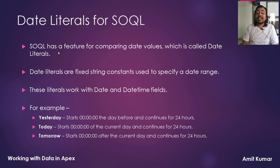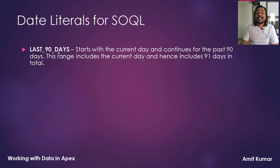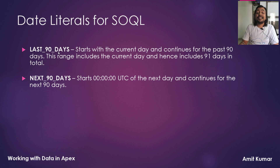For example, yesterday starts with 12 AM the day before and continues for 24 hours. Today starts with 12 AM of the current day and continues for 24 hours. Tomorrow starts at 12 AM after the current day and continues for 24 hours. Last 90 days starts with the current day and continues for the past 90 days — this range includes the current day, hence 91 days total. Next 90 days starts with 12 AM UTC of the next day and continues for the next 90 days.